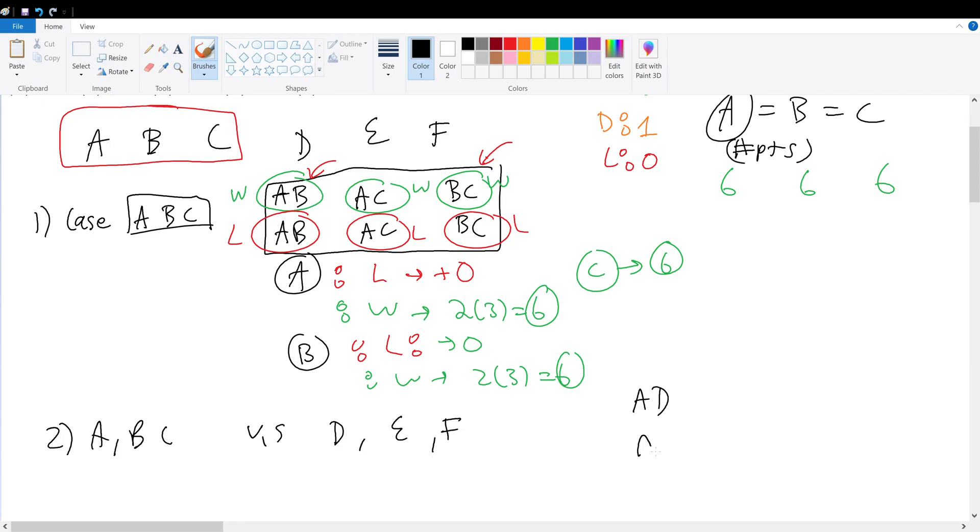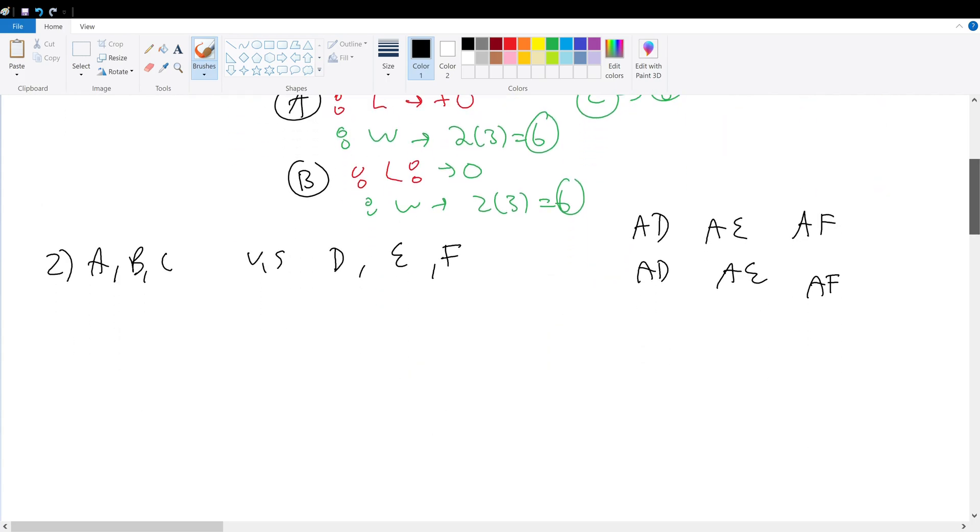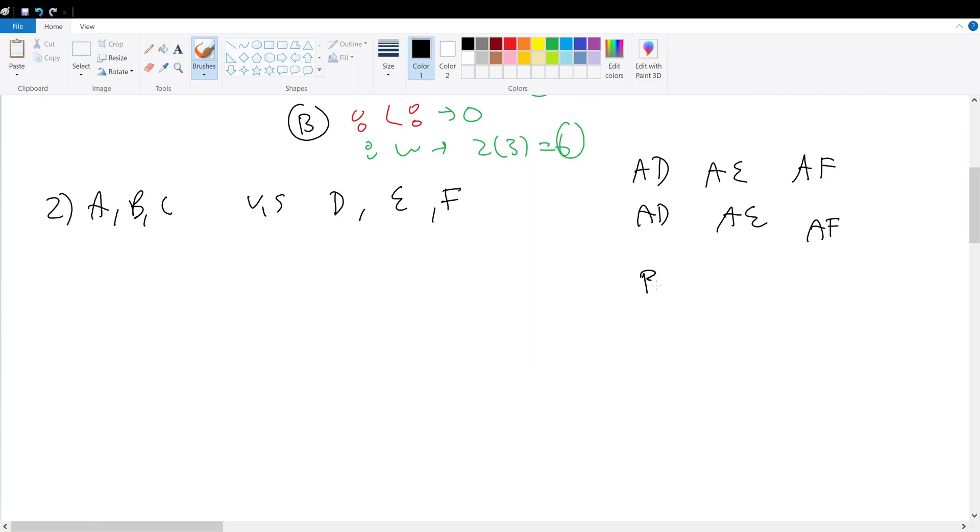So the total possible cases are A-D twice, A-E twice, A-F twice. That means we want to maximize the number of points that each team played. B would have the same distribution: B-D twice, B-E twice, B-F twice. C would have the same: C-D twice, C-E twice, C-F twice.